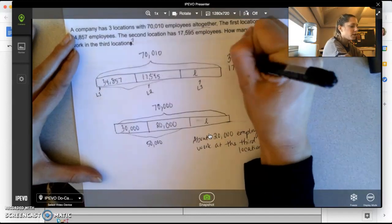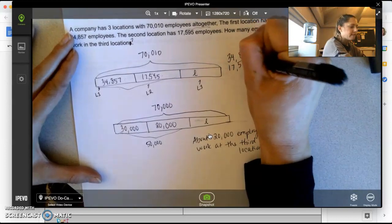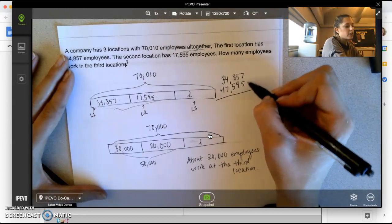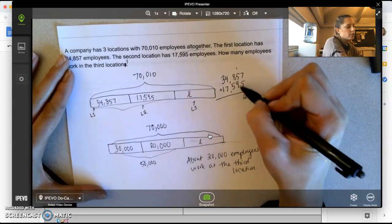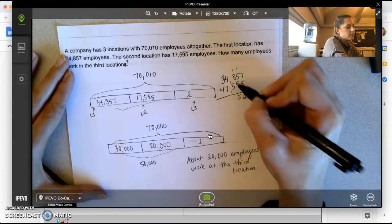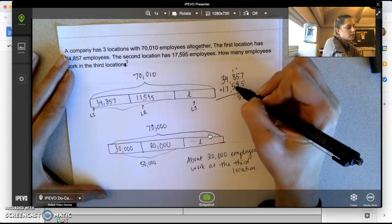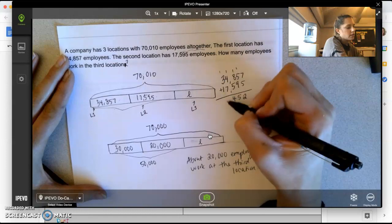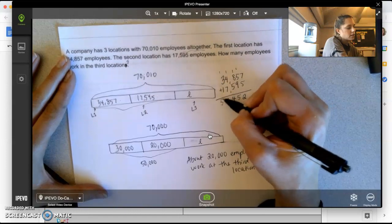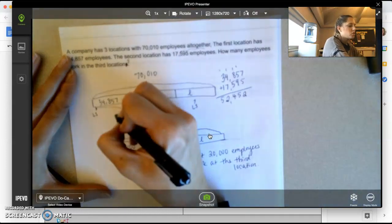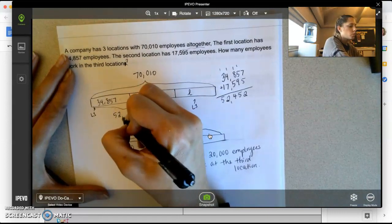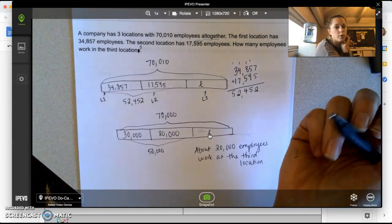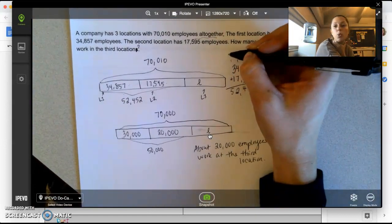Five plus seven is 12... And I can see that these two parts together, location one and location two, have 52,452 employees. So this is like my step one. Remember, we have more than one step.